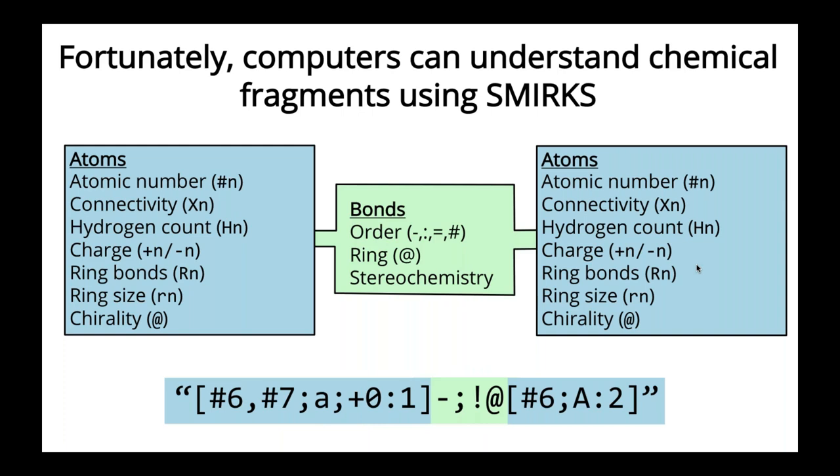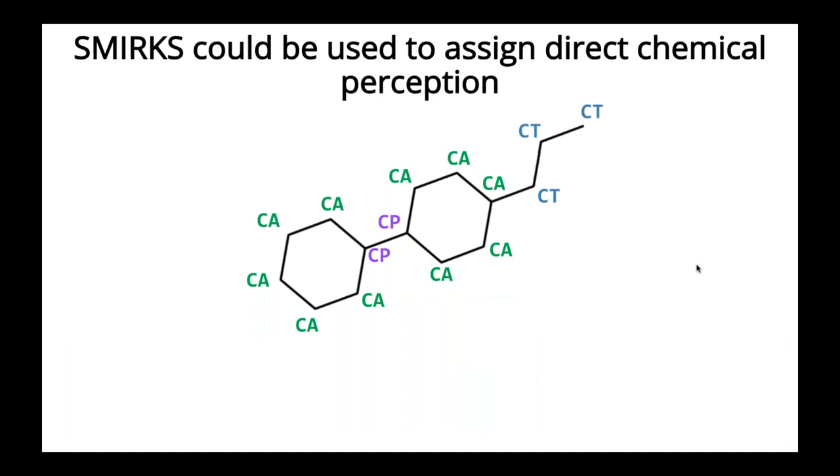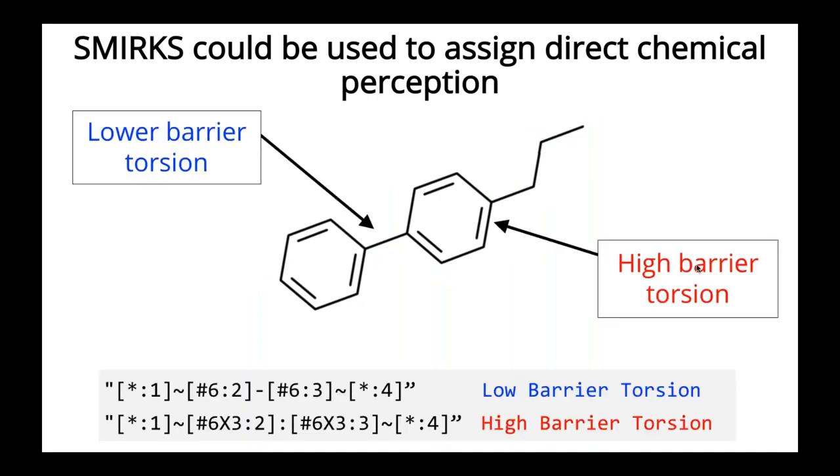Now these get much, much more complicated from a human perspective reading them, but they do allow a computer to parse molecules and find these fragments. Which means that instead of relying on atom types and just connectivity to assign parameters, we could keep the entire identity of our molecule, including bond order, any other information you want to store, and then assign parameters based on a direct chemical perception.